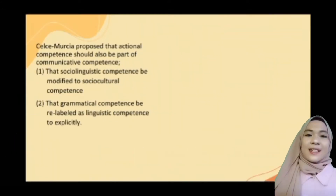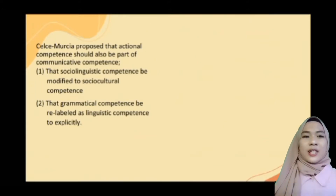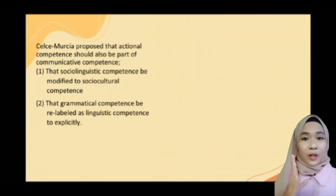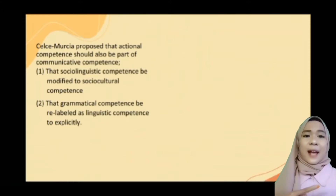Next, in the mid-90s, Selza Murzia proposed that actional competence should also be part of communicative competence. The authors made two changes in terminology from the Cannelli-Swain model. First, the sociolinguistic competence be modified to sociocultural competence, meaning the cultural background knowledge needed to interpret and use a language effectively. And second, the grammatical competence be relabeled as linguistic competence to explicitly include the sound system and relations, as well as grammar, morphology, and syntax.